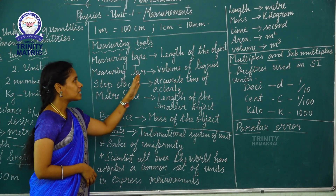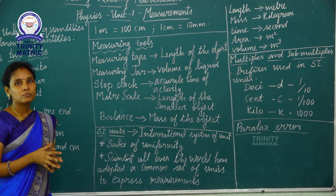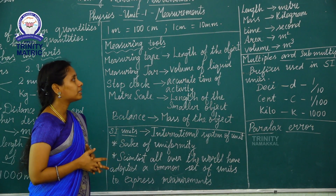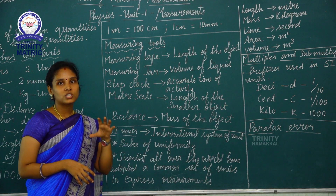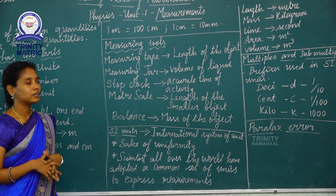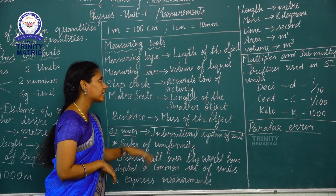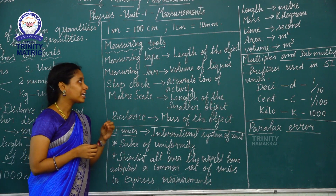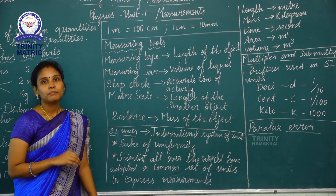Next, measuring jar. It is used to measure the volume of liquid. For example, you can use it to measure milk in liters. And a stop clock is used to measure the accurate time of an activity.